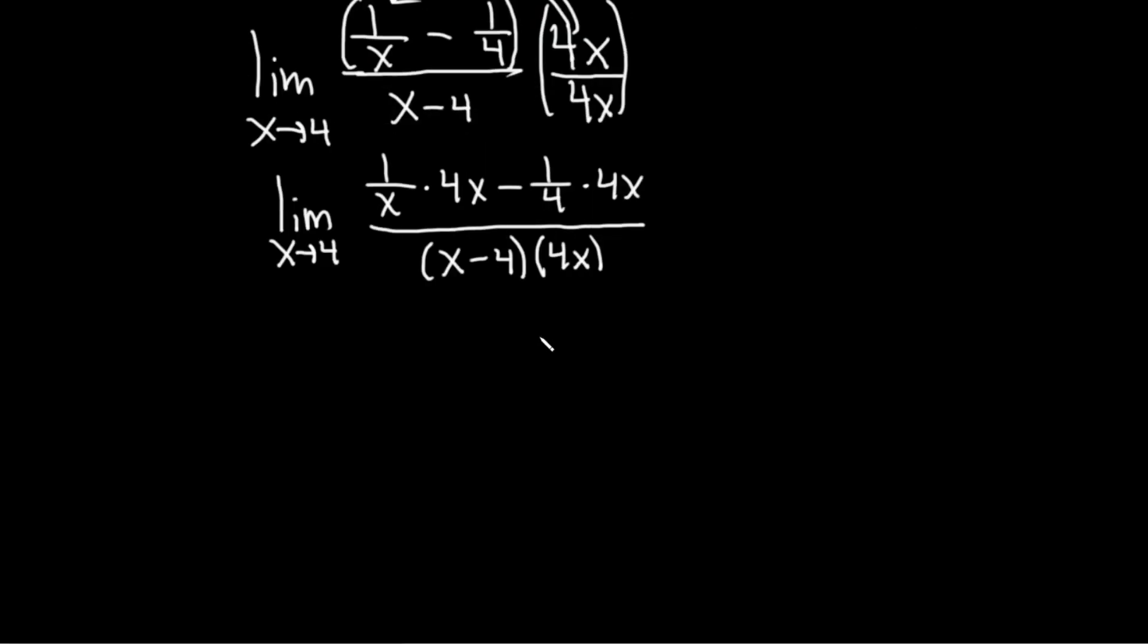Okay let's go ahead and clean up the numerator. So this is the limit as x approaches 4. And looks like the x's cancel here. So we're left with 4. And here the 4's cancel so we're left with x. Oh this is interesting. This is really cool. And then here we have x minus 4 times 4x. Something interesting is going to happen right now. So check this out.